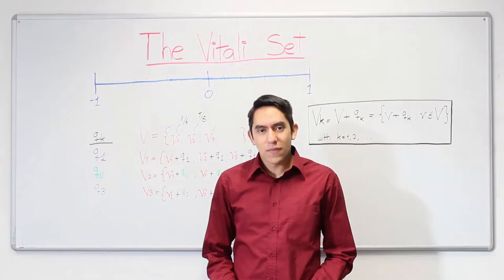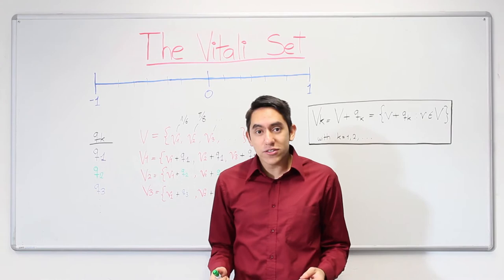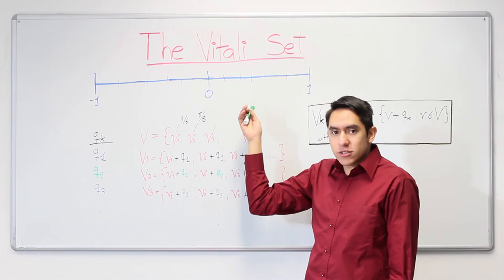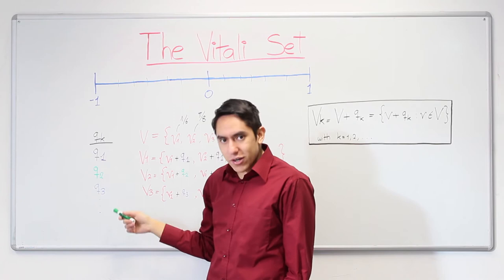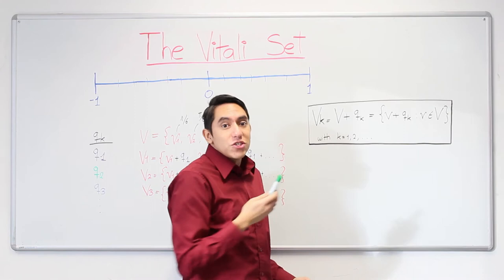To prove this, we demonstrate that it is not possible that the Vitali set may have a size. Namely, we assume that this set is Lebesgue measurable, and then we derive a contradiction. First, we take all the rational numbers between minus 1 and 1. As they are countable, we can easily make a list, letting Q_k be an indexed enumeration of the rational numbers. For our demonstration, we have to take the translated sets, which are just shifted copies of the Vitali set, but added the rational numbers.